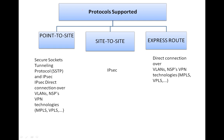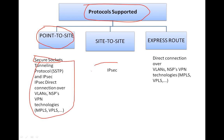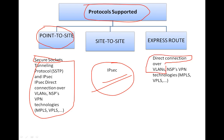Next, let's talk about supported protocols. Point-to-Site supports SSTP (Secure Socket Tunneling Protocol) and IPSec. ExpressRoute uses direct connection over VLANs and supports NPS VPN technologies like MPLS and VPLS. For Site-to-Site, it uses IPSec. So MPLS and VPLS are common to both Point-to-Site and ExpressRoute, while Site-to-Site uses IPSec only.